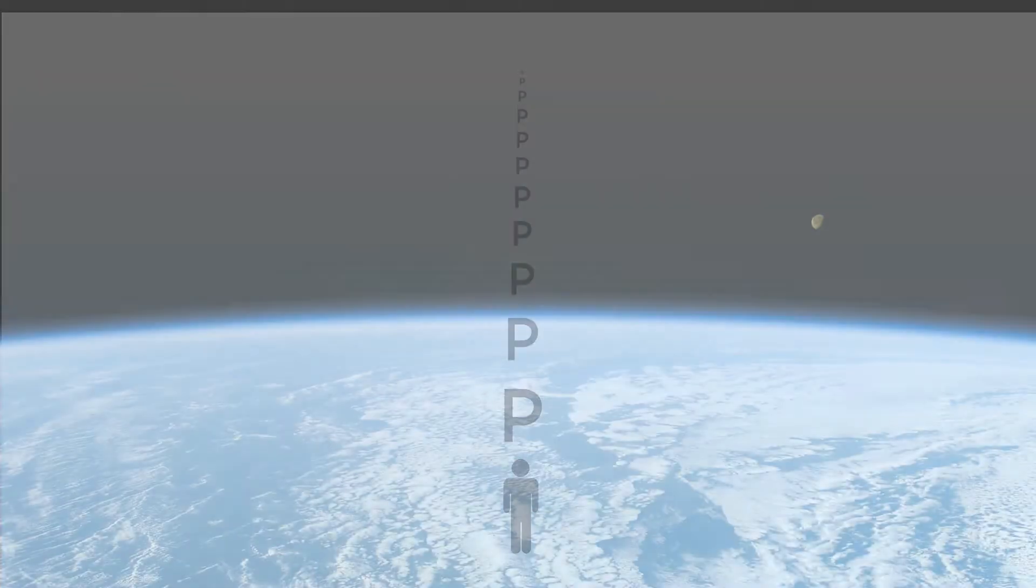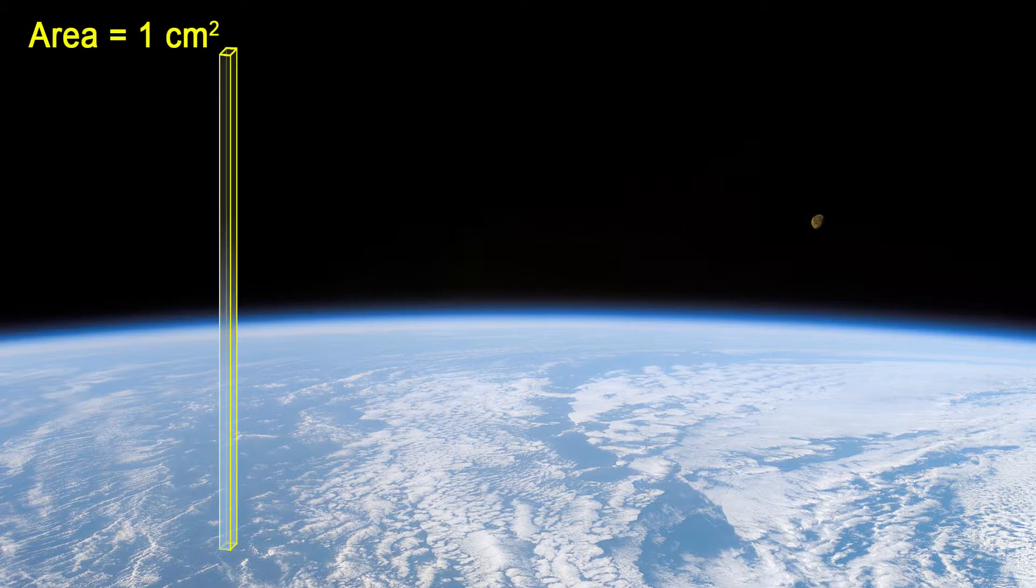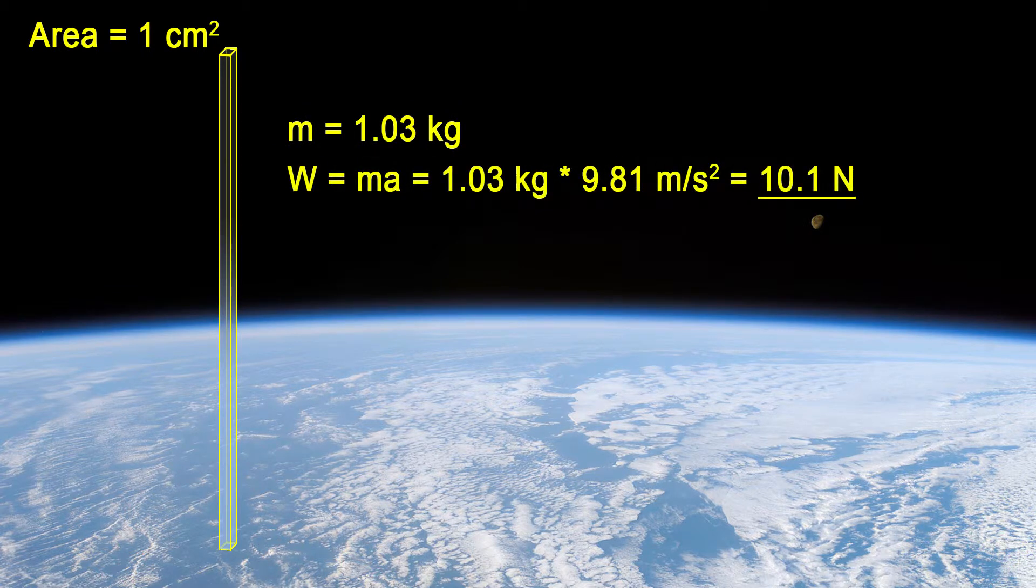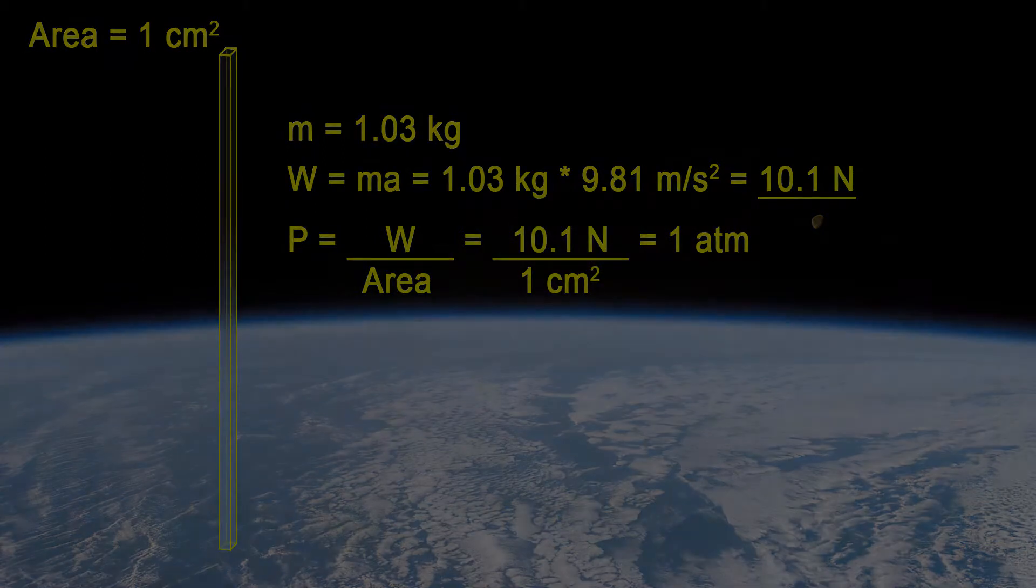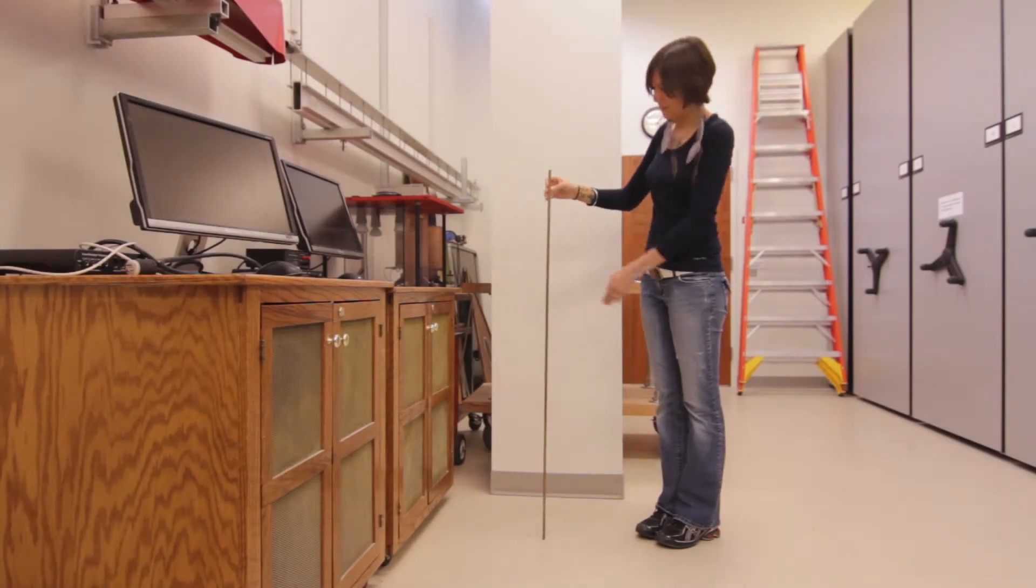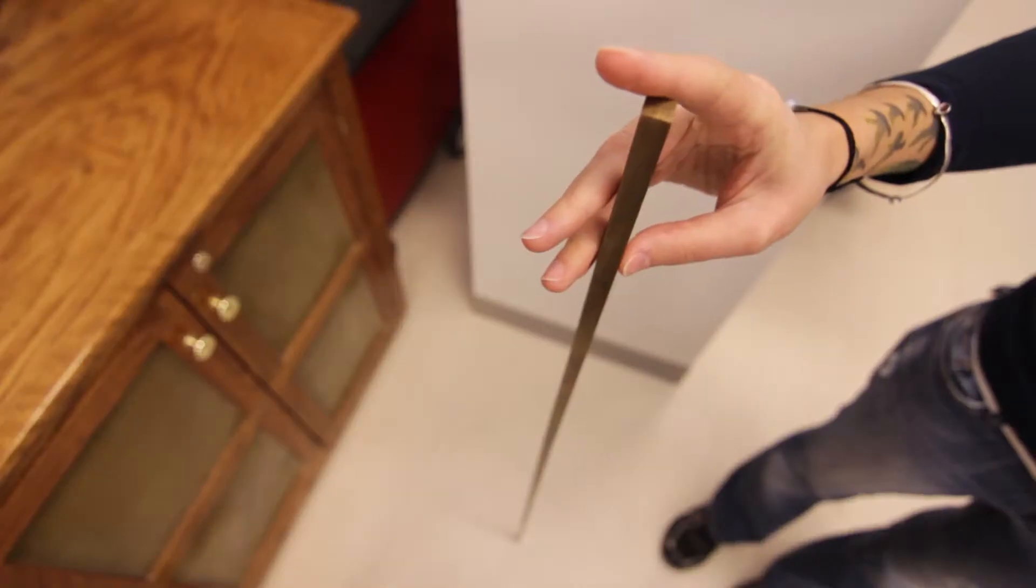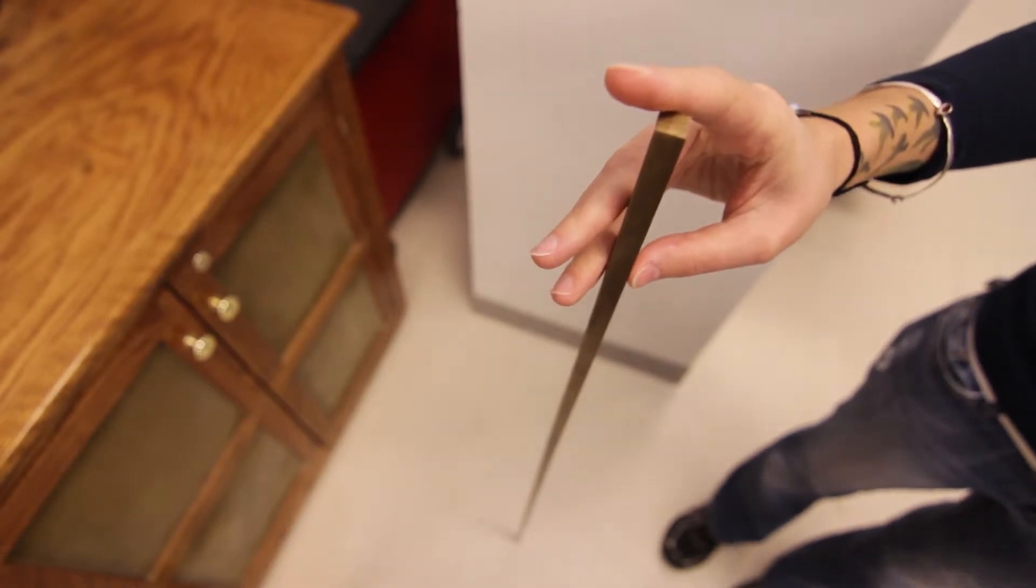Pressure is a force distributed over an area. A column of air one square centimeter in cross-section, from the surface of Earth out to the edge of space, would have a mass of 1.03 kilograms and a weight of 10.1 Newtons. A brass bar is shown weighing 10 Newtons and having a cross-section of one square centimeter. It represents the weight of Earth's atmosphere.